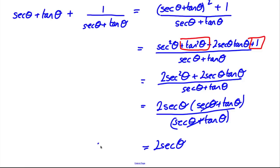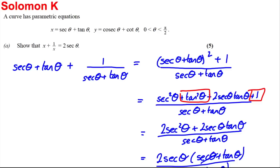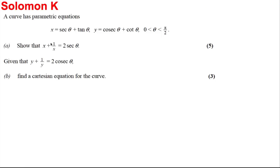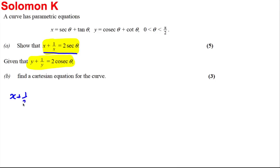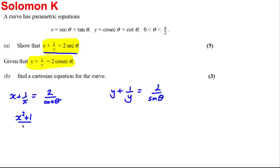So X plus 1 over X equals 2 sec θ, and we're told Y plus 1 over Y equals 2 cosec θ. For the Cartesian equation: rewriting, X plus 1 over X is 2 over cos θ, meaning (x² + 1) over x equals 2 over cos θ. Similarly, (y² + 1) over y equals 2 over sin θ.